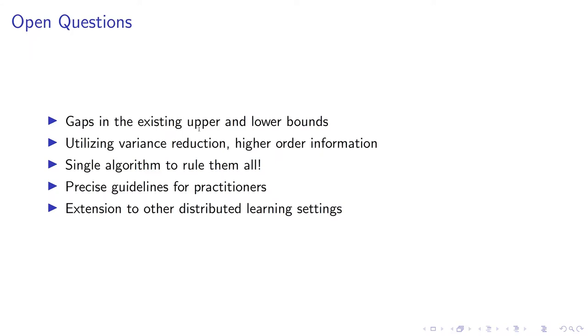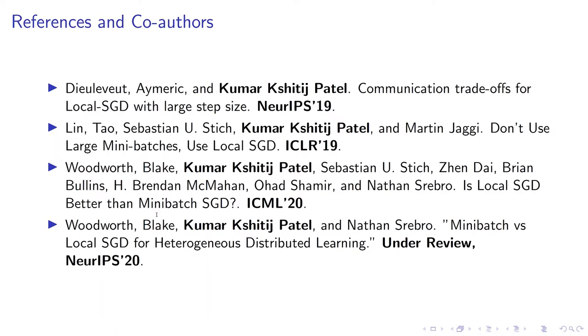It leaves open questions such as finding matching upper and lower bounds, as well as using variance reduction in these algorithms. More importantly, the biggest question is, can we find a single algorithm which rules all these settings, low and high heterogeneity, low and high variance? Can we provide precise guidelines for practitioners and some extensions to other distributed learning settings?